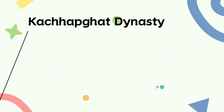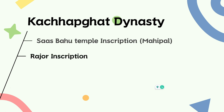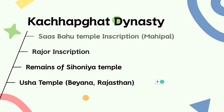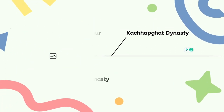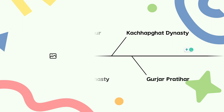The other dynasty is the Kachapghata dynasty. The first important inscription is the Sashvahu Shilalek, inscribed especially by Mahipal. Then there is the Raja Aur inscription. You will also find the Sihonia Mandir and some other inscriptions. There is also a Ushah Temple located in Rajasthan, with one inscription there as well. All these are located within the Kachapghata dynasty.